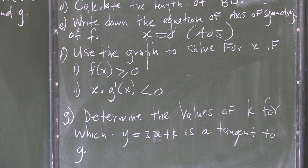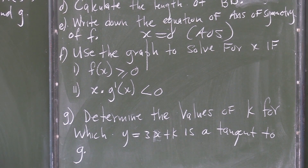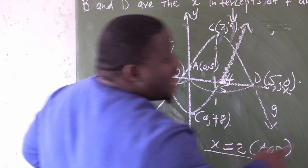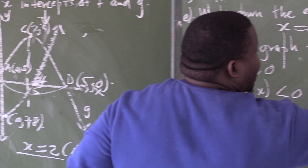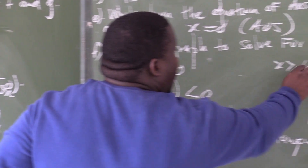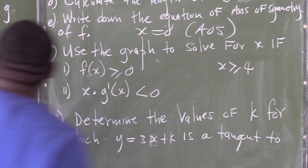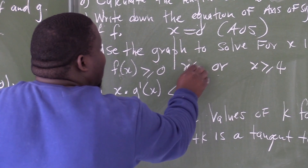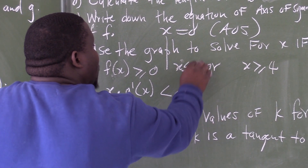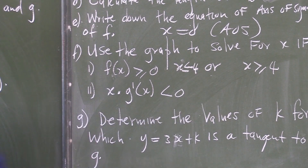Use the graph to solve for x if f of x is greater or equal to 0. So, my answer for this one would say when x is greater or equal to 4, or when x is less or equal to negative 4.